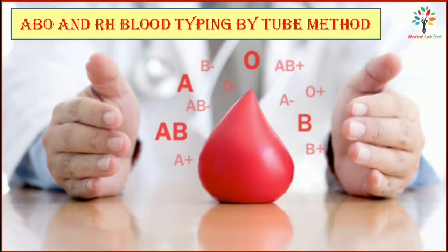This tube method is almost similar to the slide method, especially the principle and interpretation are almost the same, but there are minor differences in the procedure. Slide method and tube method for blood grouping are under forward grouping method. There is another method known as reverse method or reverse grouping. In forward grouping we use red cells, but in reverse grouping we use plasma or serum — especially serum.